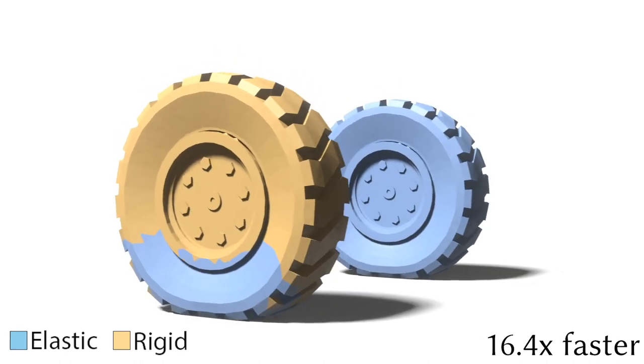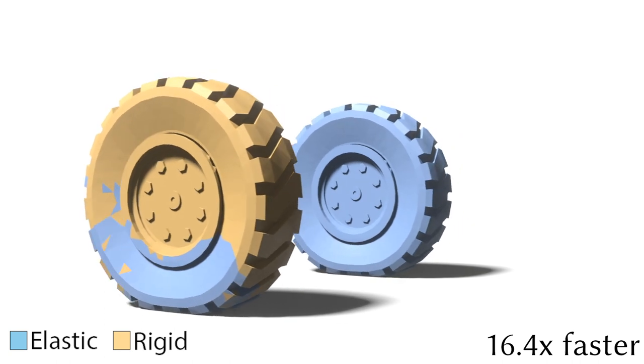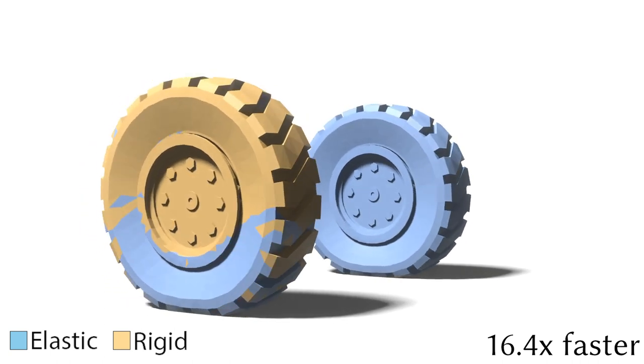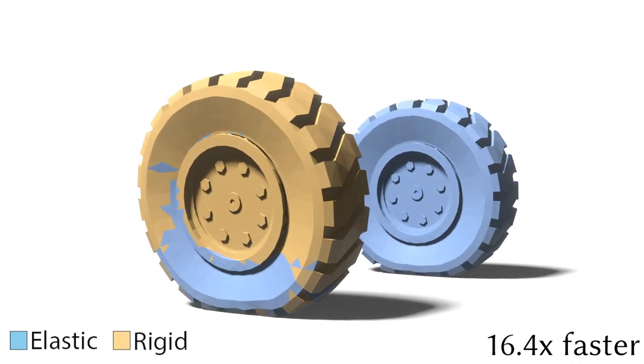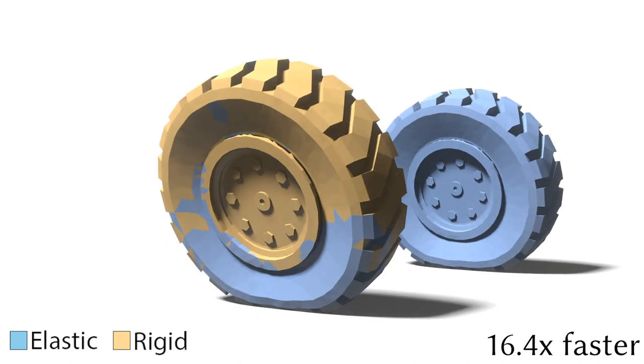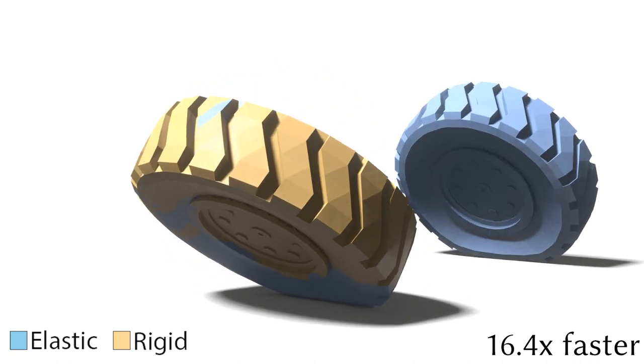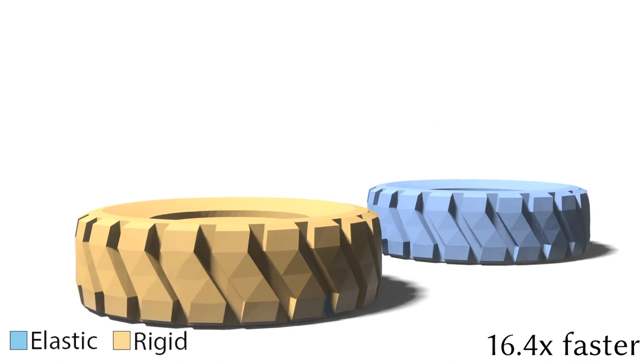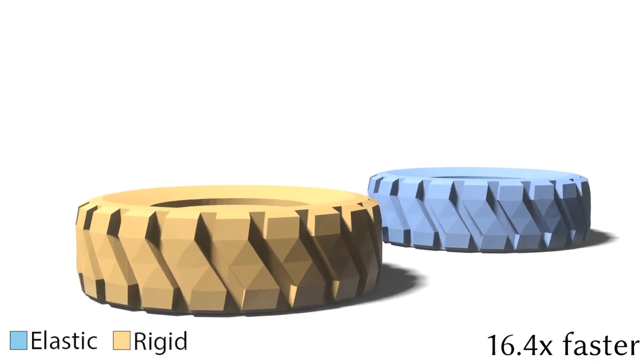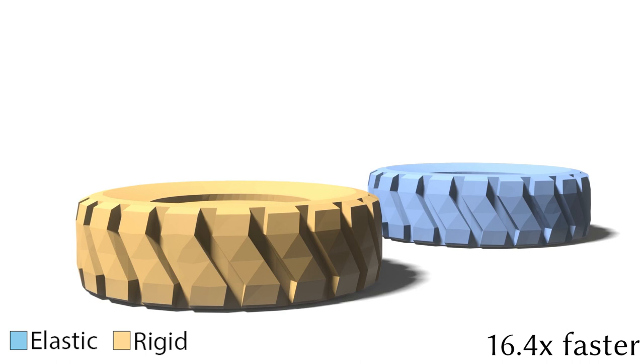Note the excellent agreement between the adaptive and non-adaptive outputs. Our technique works well on objects with heterogeneous materials. This wheel has a stiff steel hub and a rubber-like tire. Notice that the hub remains rigid for most of this animation.